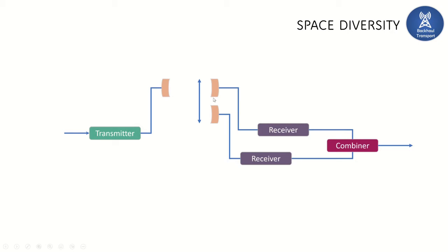Once the signals are received, they will be given to the combiner. Based on the function of the combiner, it will take either the best signal from the two antennas or sum the signals from both antennas and give it to the receiving circuit.